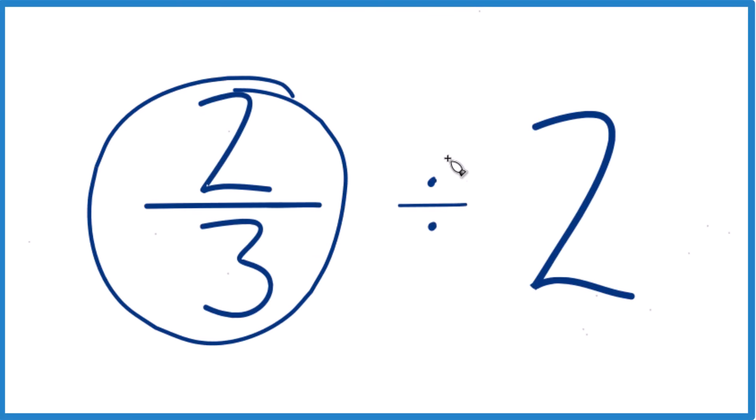Let's figure out two-thirds divided by two. So the first thing is that two-thirds is less than one, so we're trying to see how many times two goes into a number that's less than one. So we should end up with a fraction, so keep that in mind.